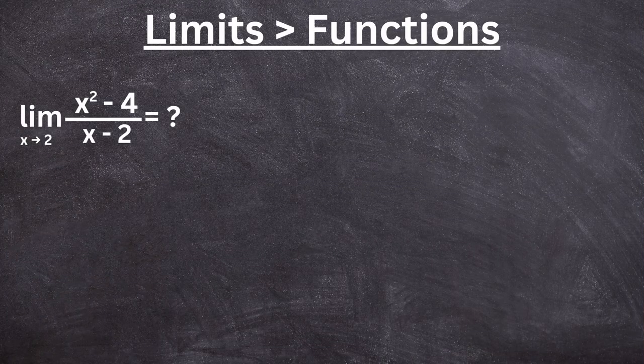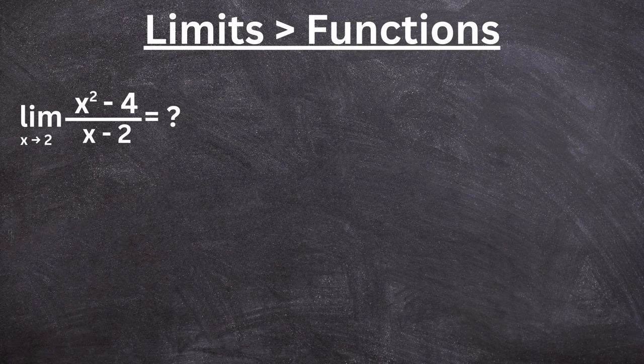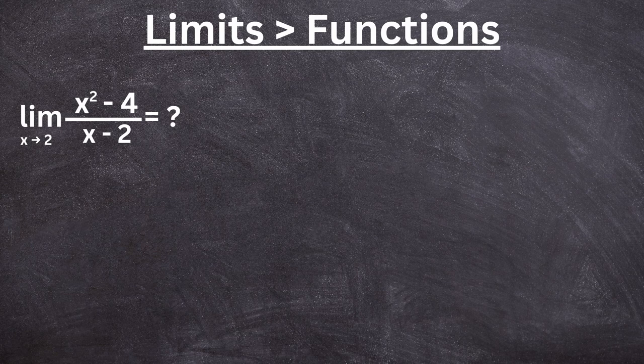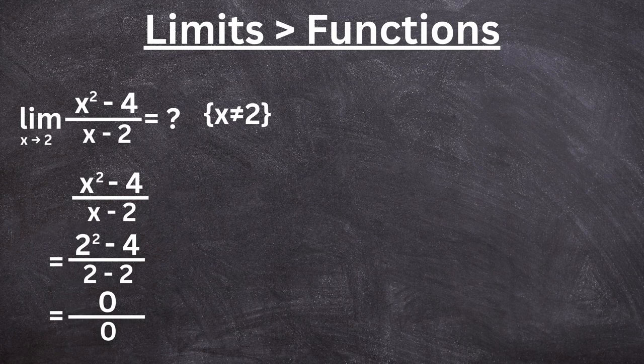Now, did you know there are limits that can exist without the function actually existing at that point? Take a look at this limit: the limit as x approaches 2 of (x² - 4) over (x - 2) equals what? If you paid very close attention, there is a domain restriction in this function—x can't be 2, but x is approaching 2, because if we plug in 2 and directly substitute, it would be 0 divided by 0.